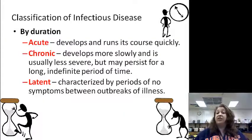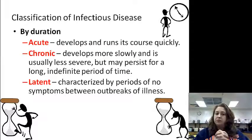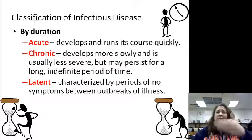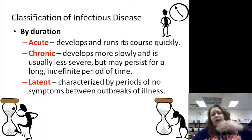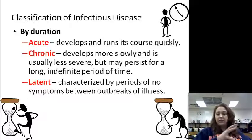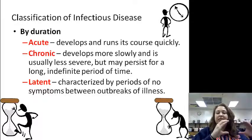Classification of infectious diseases by duration — is it acute, chronic, or latent? Acute means it develops and runs its course quickly; it's short. Chronic means it develops more slowly and is usually less severe, but it persists for a longer, more indefinite period — it just keeps going. Latent is characterized by a period of no symptoms, then outbreaks, then no symptoms, then outbreaks — you may have these latent periods of showing no symptoms.